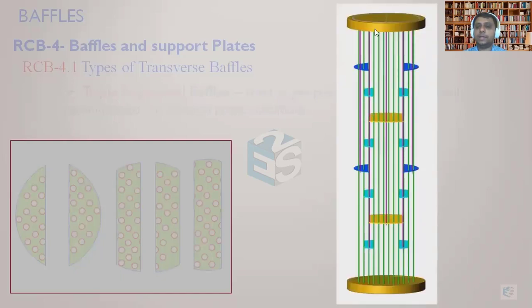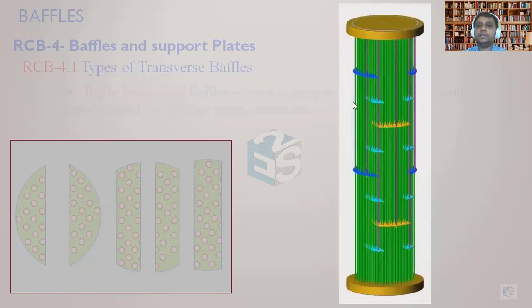Now the baffle skeleton or the tube bundle skeleton would be like this. This is how the arrangement would be and this is how the tube bundle would look like. You can see over the tube bundle how it would look like.